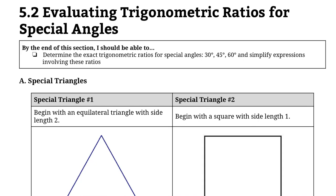In this video we will be evaluating trigonometric ratios for special angles. These special angles are the 30 degree angle, the 45 degree angle, and the 60 degree angle.